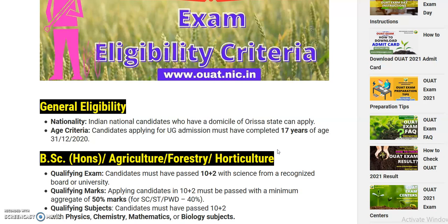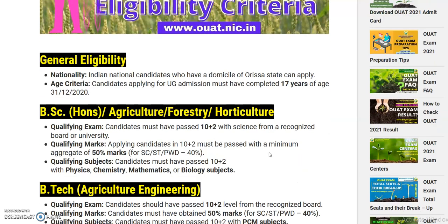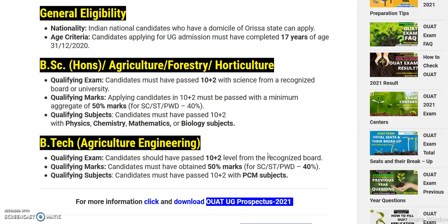Candidates must have completed 17 years of age by December 2020. The candidates must have completed 10 plus 2 with science from a recognized board or university. So, we will have plus two with science.